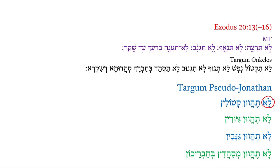Here we have negative particles introducing he, vav, yod as a verbal root, and they are all imperfect second person masculine plural. 'Do not be' — and then do not be what? That's a different approach than what we had seen before. This is going to be non-verbals instead of commands.